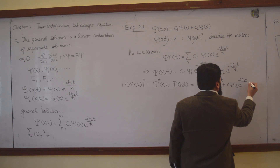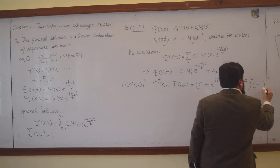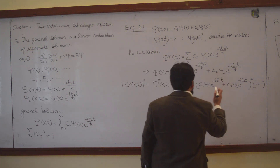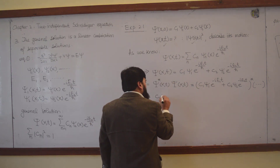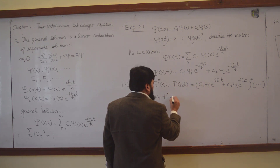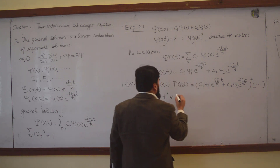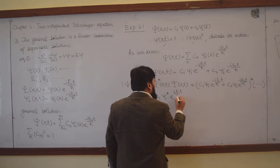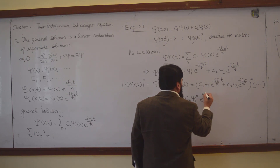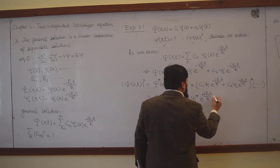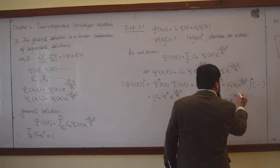Taking the conjugate of the wave function, we get C1 ψ1* e^(+iE1 t/ℏ) plus C2 ψ2* e^(+iE2 t/ℏ). This conjugate is then multiplied with C1 ψ1 e^(-iE1 t/ℏ) plus C2 ψ2 e^(-iE2 t/ℏ).